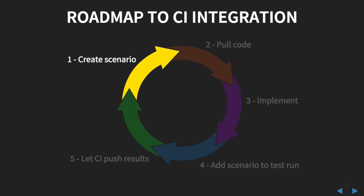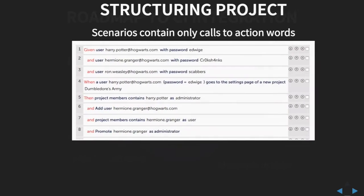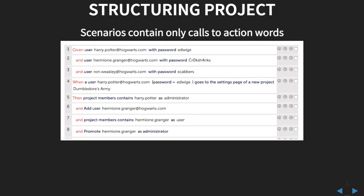Let's start with the first step, which is creating scenarios and eventually action words that describe a new feature in your product or the part you want to test. To ease the automation of those tests, you'll have to follow a few rules. The first rule is about scenarios: you should only add a call to an action word in the definition of your scenario — no steps with action or results.